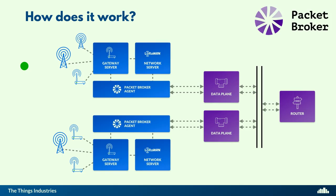Packet Broker has a few components. It has a data plane, which is facing towards the network clusters. It has a router. And in between there, we have PubSub. In our current implementation, we use Kafka, but it could also be run in Google Cloud, or it could be using open source NATS, for example. You can run it on premises. It's a generic PubSub.